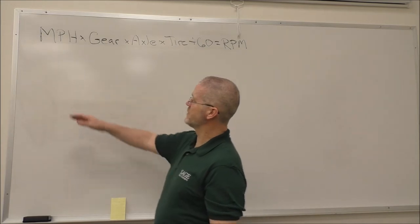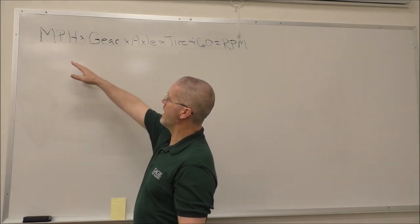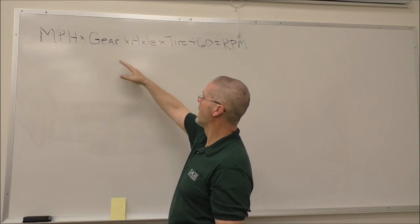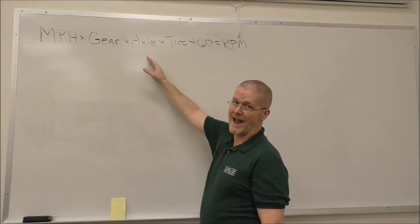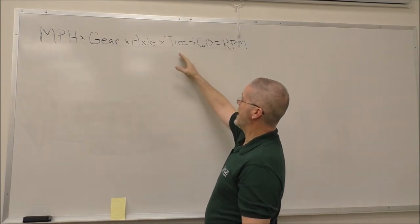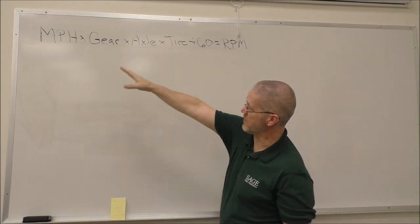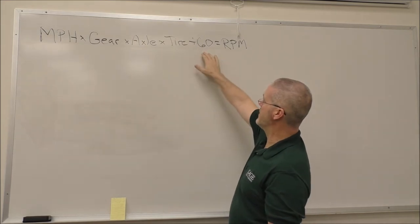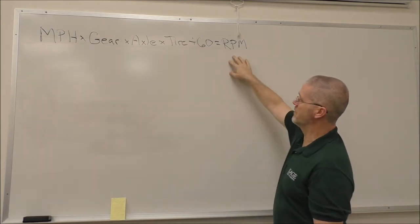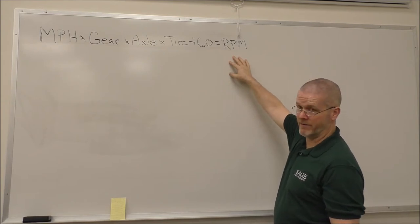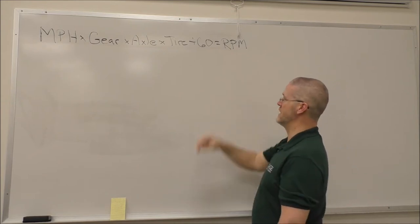There is a direct relationship between your speed in miles per hour, the gear ratio that you're using in the transmission, the gear ratio of your axle, the size of your tire (which in this formula is expressed in revolutions per mile), and because we started with miles per hour, we have to divide by 60 to end up with revolutions per minute, which is what shows on your tachometer, and that's our best friend when it comes to changing gear.